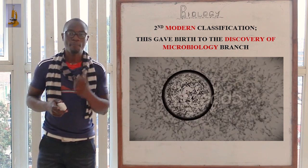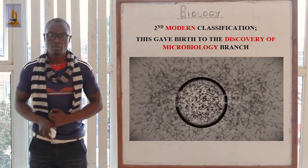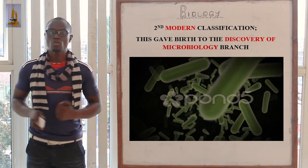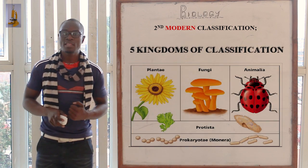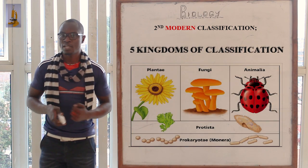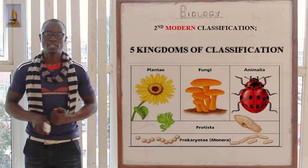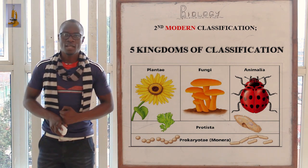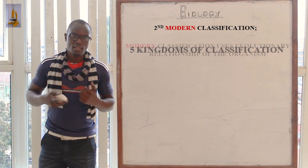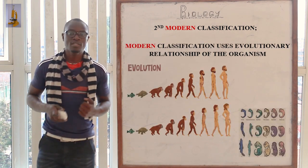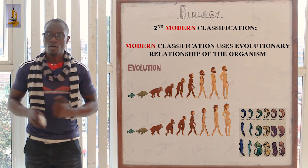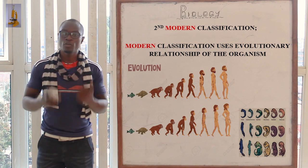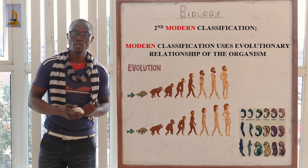These organisms couldn't be placed as either plants or animals. Therefore, modern classification led to the five kingdom system, whereby in the first kingdom we had the Monera, we had the Protoctista, and Himalia Plantae, as we are going to look at them in the upcoming classes.